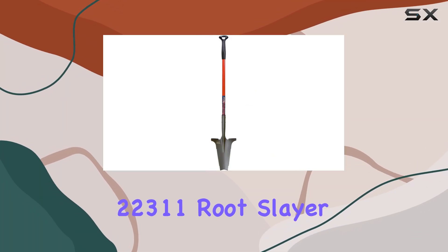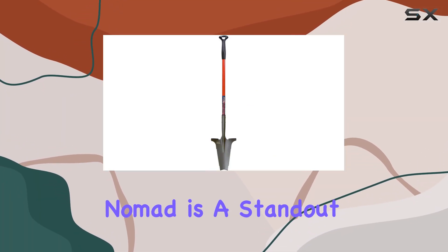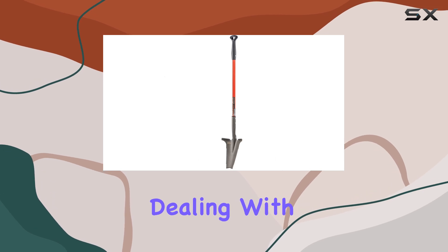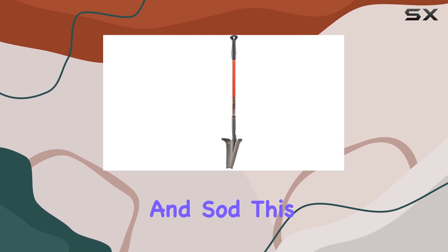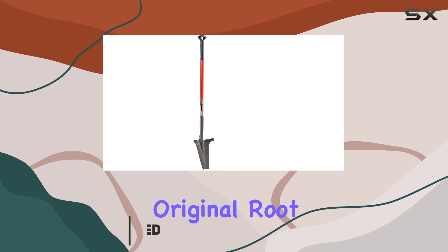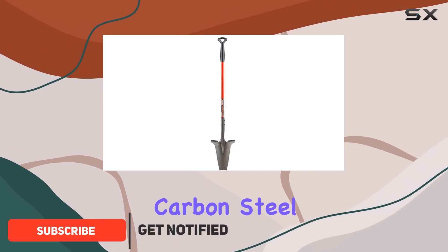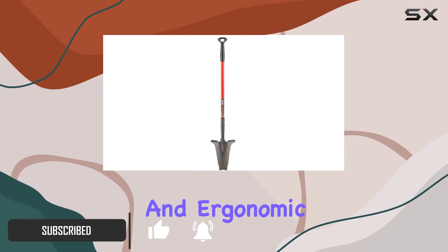The Radius Garden 223-11 Rootslayer Nomad is a standout tool for anyone dealing with stubborn roots and sod. This compact, lightweight version of the original Rootslayer features a powder-coated carbon steel shaft that's both durable and ergonomic.